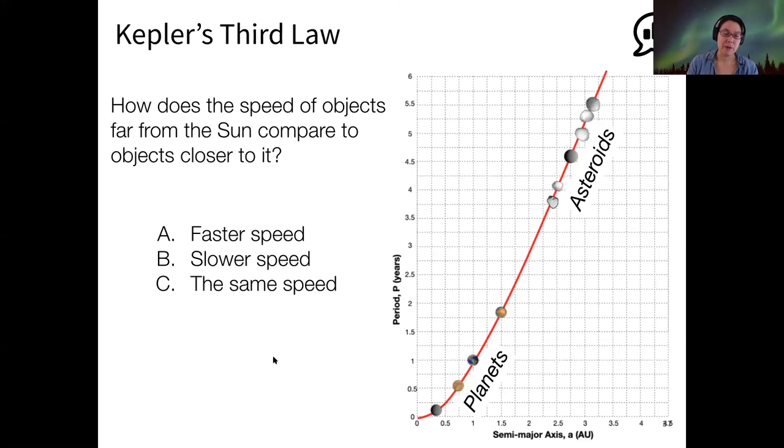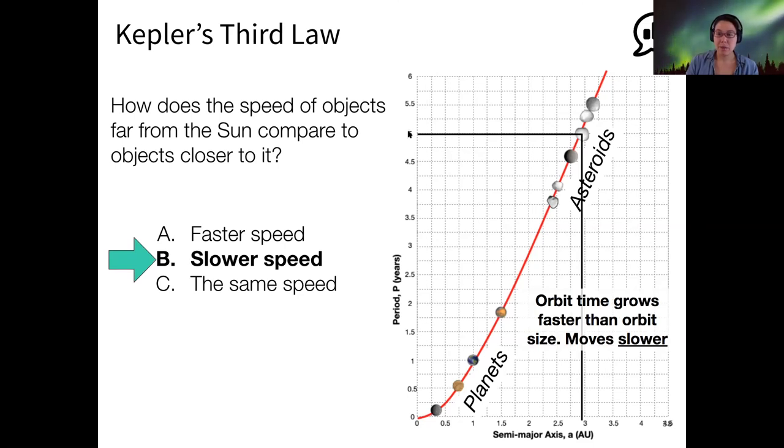I guess it's not totally fair to ask for slower speed, but I meant slower angular speed. Anyway, the orbital time grows faster than the orbital size. That's what we can see here from this graph. As we get farther and farther from the Sun, the orbital time gets larger faster, so all these asteroids are moving more slowly around the Sun than the planets are.